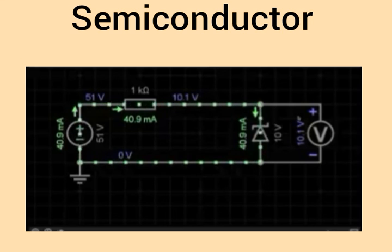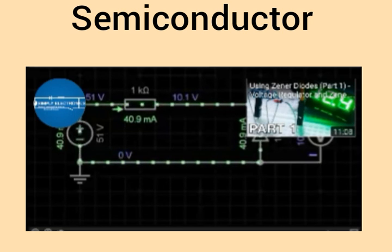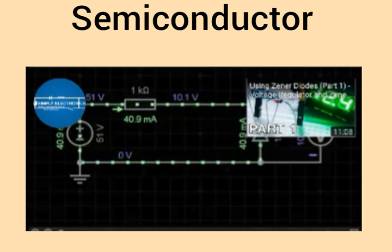I am supplying 51 volts to this circuit exceeding the Zener diode reverse breakdown voltage. The Zener diode still only has 10 volts across it.